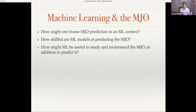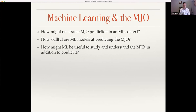Starting with how to frame the problem: what do these models look like? How skillful are they at predicting the MJO, and over how many days? I want to emphasize a third point that we've been thinking hard about: aside from tools to predict the MJO, how might these types of models be used to study and understand the MJO? I like the analogy of a dynamical forecast model — you can run it operationally, but you can also mess with the stratosphere or the ocean state to understand the physics. That's a direction for ML modeling we should continue to think hard about.